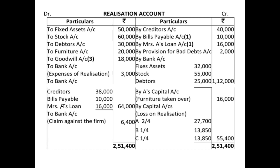On the credit side: by provision for bad debts — we transferred provision separately as discussed. Then by bank account, assets realized are shown as per the question — fixed assets 32,000, stock 55,000, debtors 25,000 — total assets realized 1,12,000. We also showed the furniture taken over by the partner. Whether an asset is sold or taken by a partner, it appears on the credit side of the realization account.